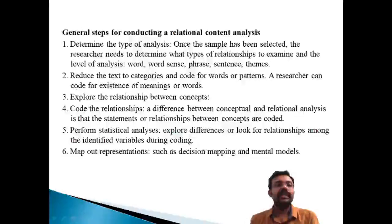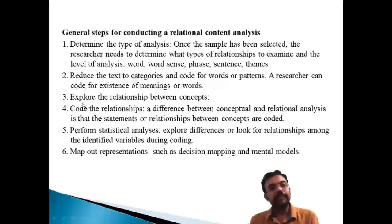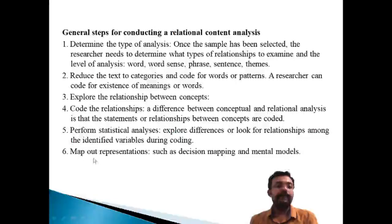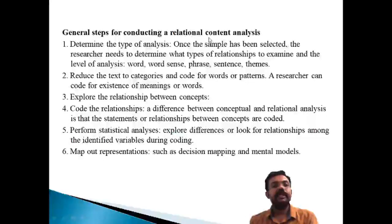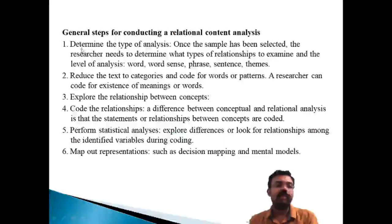To summarize the six steps for relational content analysis: first, determine the type of analysis; second, reduce text to categories and code words; third, explore relationships between concepts; fourth, code the relationships; fifth, perform statistical analysis; and sixth, map the representations. Content analysis is classified into conceptual analysis and relational analysis.